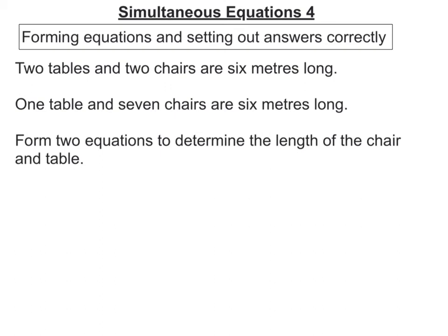So here's our second example. We've got 2 tables and 2 chairs are 6 metres long. 1 table and 7 chairs are 6 metres long. Form 2 equations to determine the length of the chair and table.